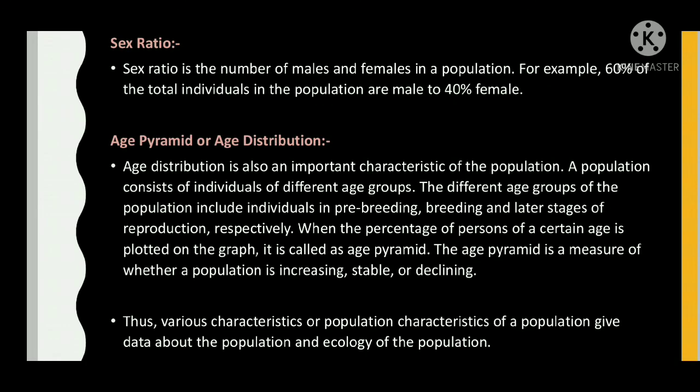Sex ratio is the number of males and females in a population. For example, 60% of the total individuals in a population are male whereas 40% are female.